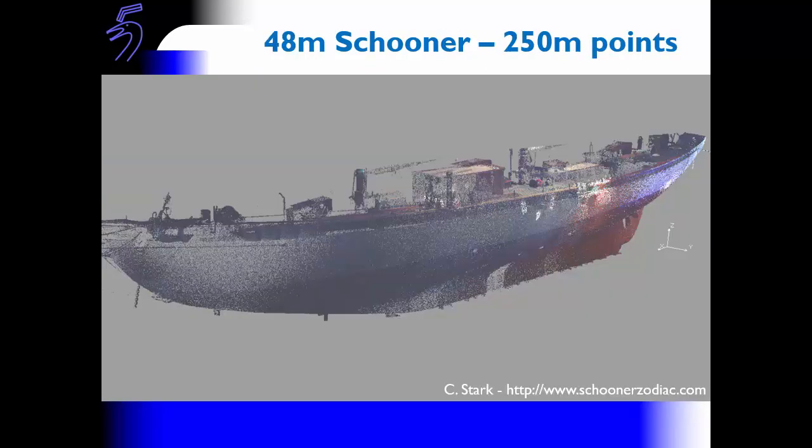Some examples of some scanned data. This is the first dataset I dealt with — a 48-meter schooner. This dataset consists of 250 million points. I believe it was surveyed at night in a floating dry dock and we can see that the colour definition is quite poor even though I've enhanced it as much as I can. It's a detailed scan — we can see the anchor chain, we can see all of the deck arrangement.